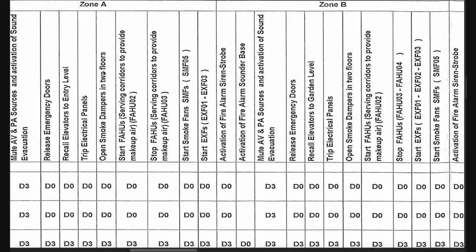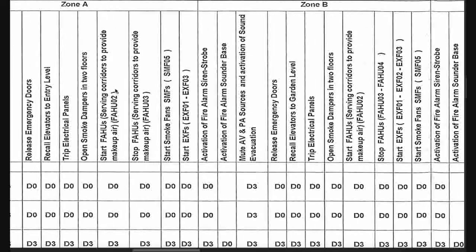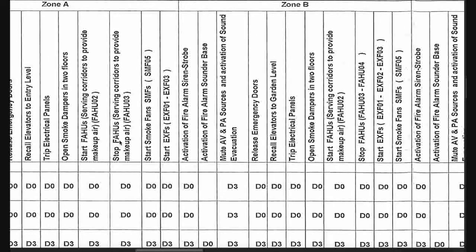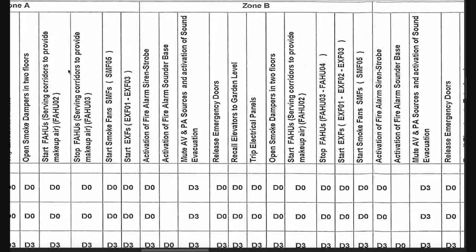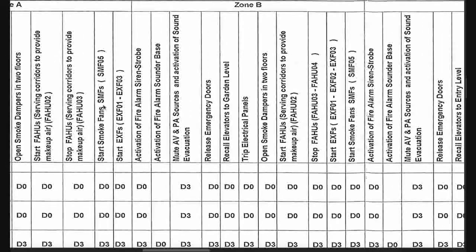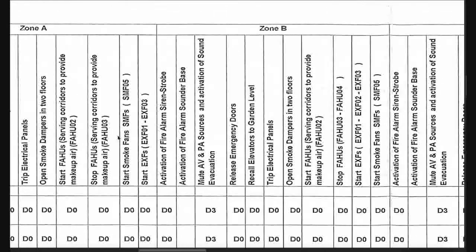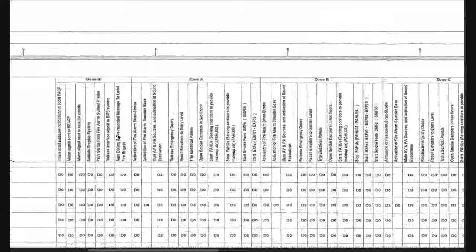Open smoke dampers in the two floors covered by the activated fire alarm zone immediately. Start the air handling unit providing makeup air; stop the air handling unit supplying air to the building. Stop the fan of the air handling unit servicing the corridors. Start smoke fans immediately and start exhaust fans immediately.